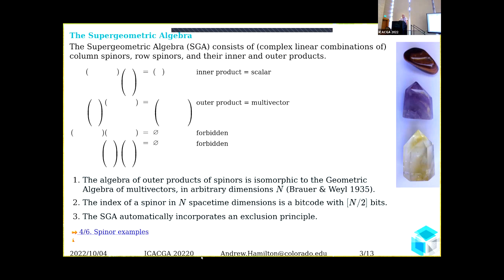It turns out that the super geometric algebra not only contains the geometric algebra by taking outer products, but it also contains the exclusion principle. Those products where row × row is forbidden and column × column is forbidden look very much like the rules for creation and annihilation operators.